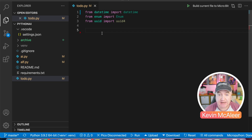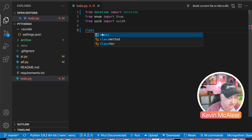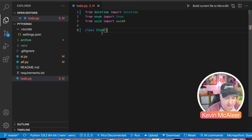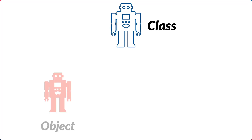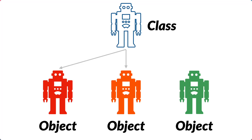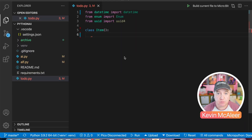Let's start off by creating an Item class — we always start our classes with a capital letter. Just to explain what classes are if you've not come across them before: a class is like a blueprint. All the objects will inherit everything the class defines, but they'll have their own set of data. In this example we've got a Robot class with different robots having different colour attributes — red, orange and green.